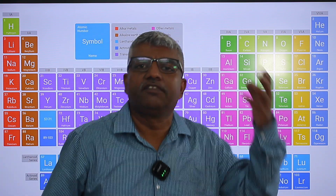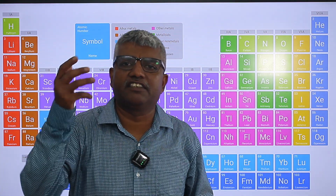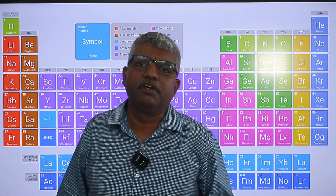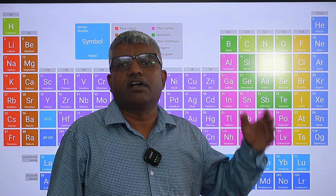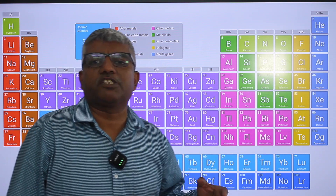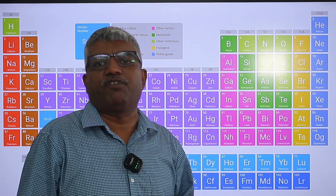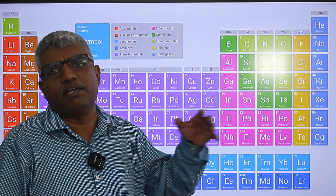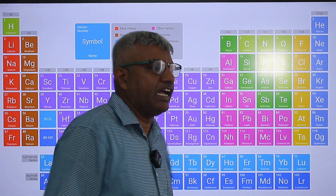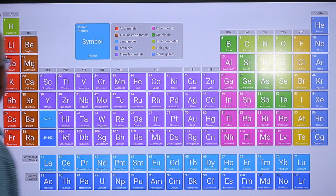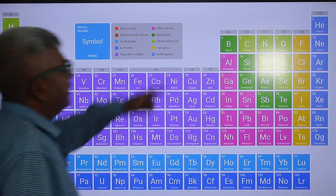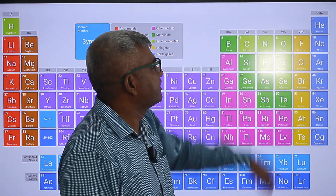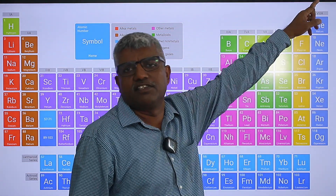Let me recall group 1A: hydrogen, lithium, sodium, potassium, rubidium, cesium, francium. Then beryllium, magnesium, calcium, strontium, barium, radium. Boron, aluminium, gallium, indium, thallium. Carbon, silicon, germanium, tin, lead. Nitrogen, phosphorus, arsenic, antimony, bismuth. Oxygen, sulfur, selenium, tellurium, polonium. Fluorine, chlorine, bromine, iodine, astatine. Helium, neon, argon, krypton, xenon, radon.